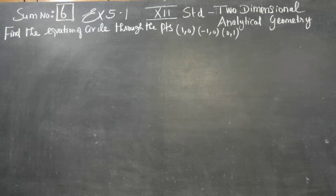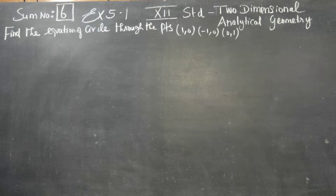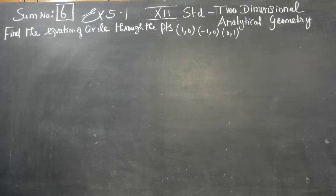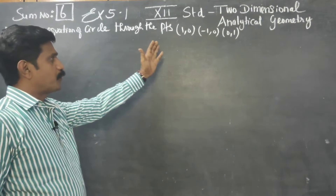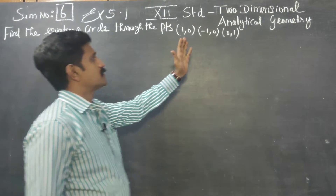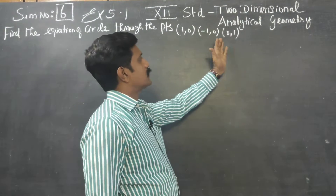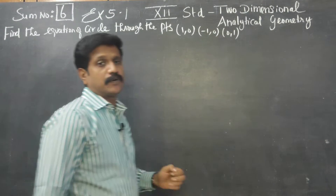Dear 12th standard students, in two-dimensional analytical geometry, exercise number 5.1, we are going to find the equation of the circle through the points (1,0), (-1,0), and (0,1).